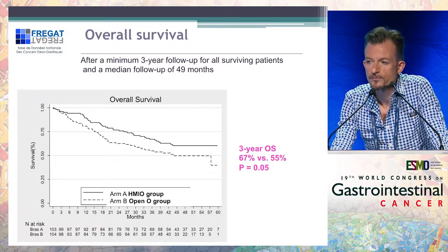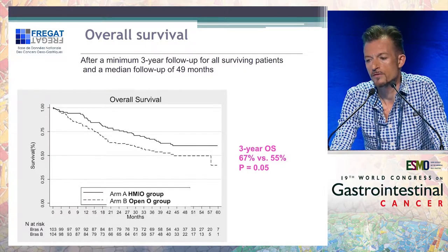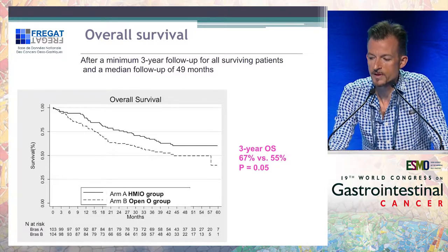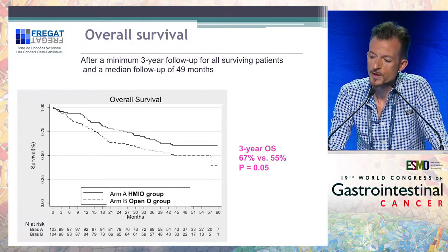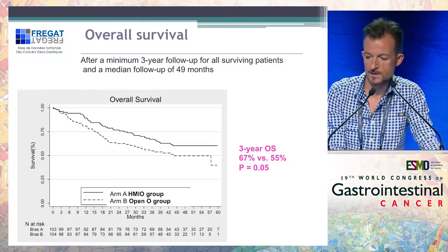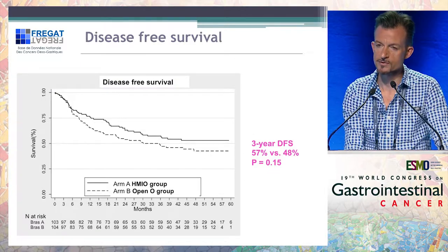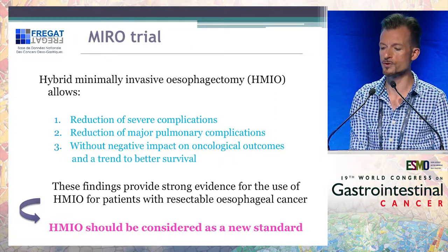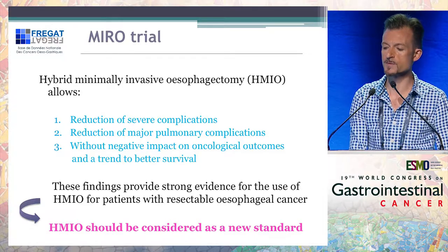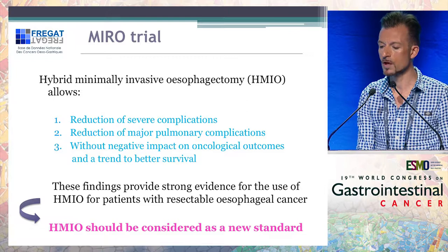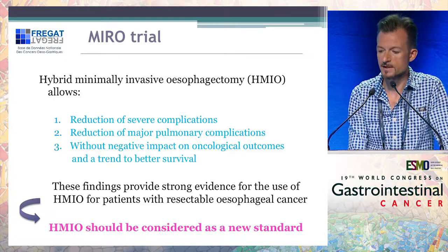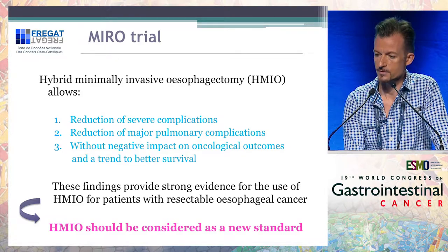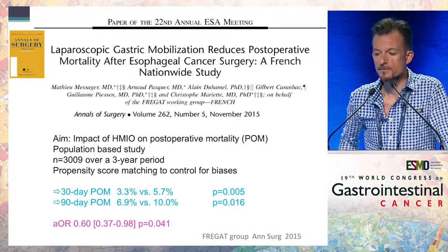Regarding overall survival, after waiting for a median follow-up of 49 months, there is a strong trend with a significant survival benefit in the hybrid group compared to the open group: 67% versus 55%, respectively. The same was observed for disease-free survival, which was also a secondary endpoint of the study. We conclude from this trial that the hybrid minimally invasive approach allows a reduction of severe complications, specifically major pulmonary complications, without negative impact on oncological outcomes. We believe that the hybrid minimally invasive approach should be considered a new standard worldwide for the surgical approach to esophageal cancer.